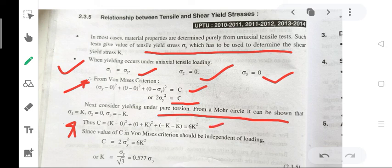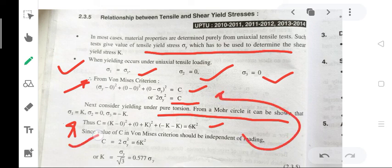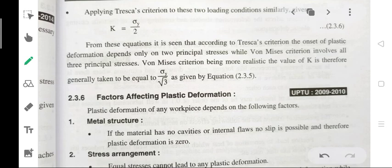Substituting the value of C in this equation: 2(sigma_y)² = 6k², therefore k = sigma_y/√3 = 0.577 sigma_y. Now applying Tresca's criteria to these two loading conditions similarly.